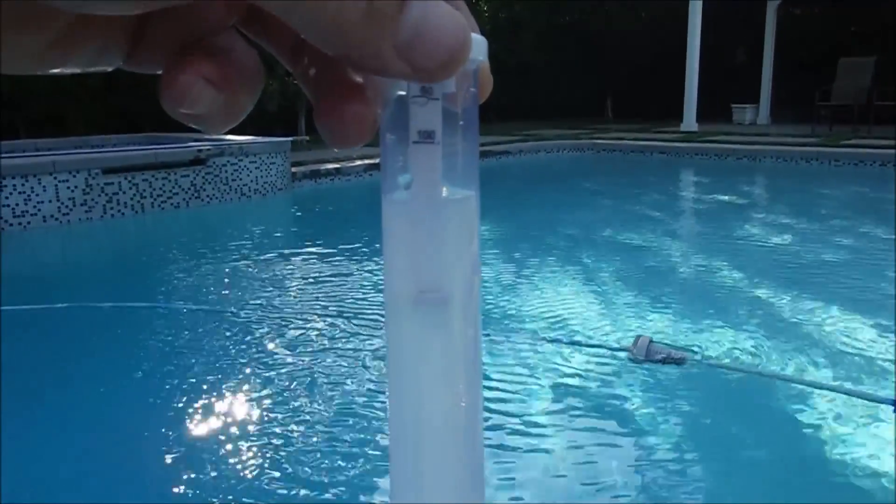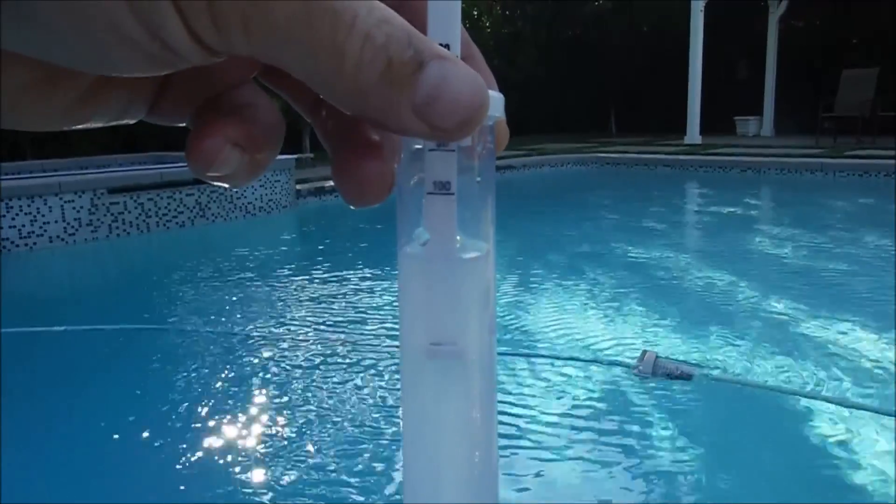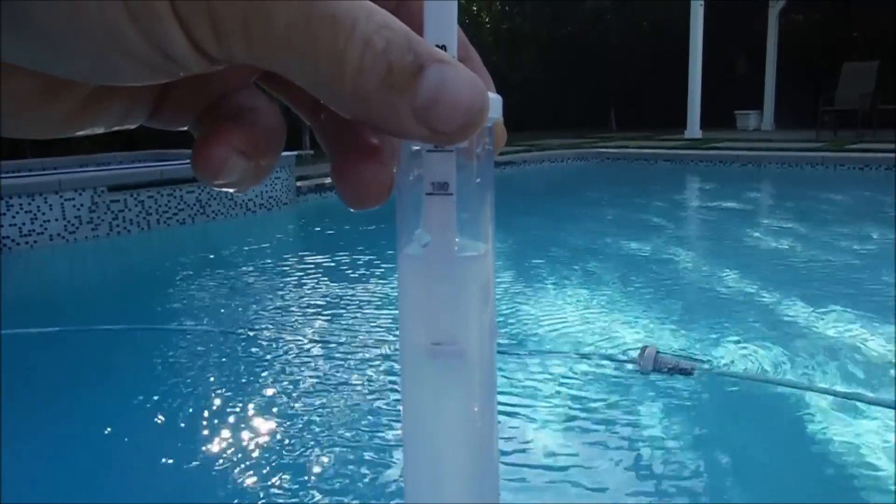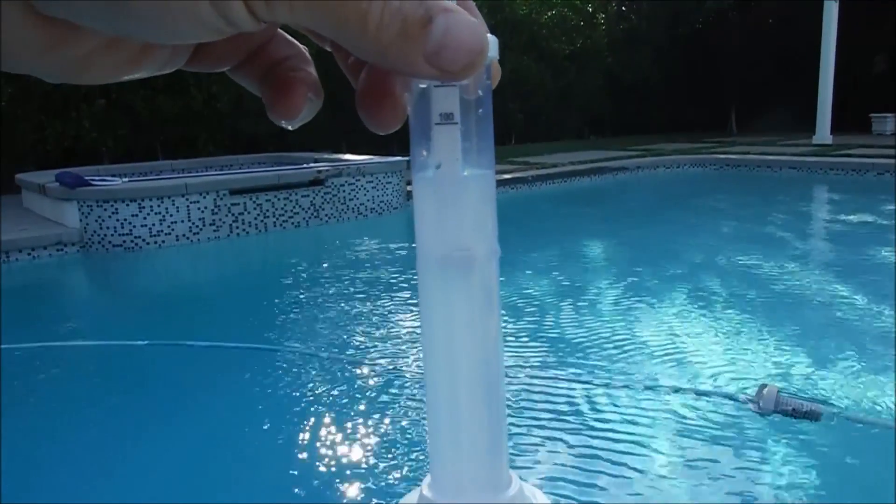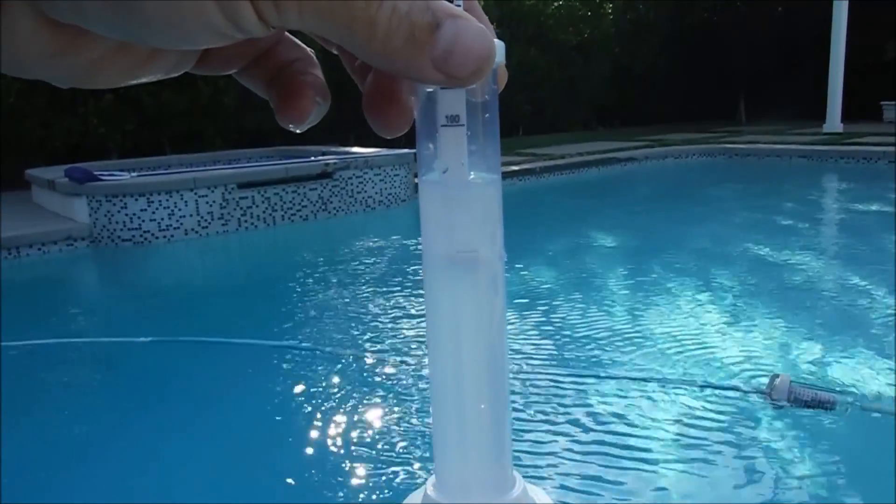If you're doing this test and the black dot disappears before it gets to the 100 parts per million mark, that means that the cyanuric acid level is above 100 parts per million. In that case go ahead and do the dilution test which is one part pool water, one part tap water.